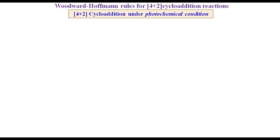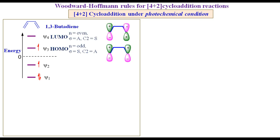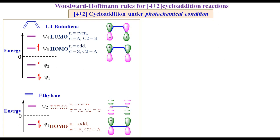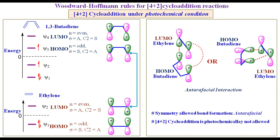Under photochemical conditions, one of the two electrons from ψ2 of 1,3-butadiene jumps to ψ3, making ψ3 the HOMO and ψ4 the LUMO. In ethylene, ψ1 is HOMO while ψ2 is LUMO. The HOMO of butadiene and the LUMO of ethylene have different symmetry, so the allowed interaction will be antarafacial. The molecule resulting from antarafacial interaction would be too strained to be formed. So, 4+2 cycloaddition is photochemically not allowed.